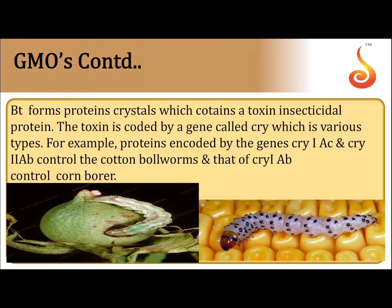Cry genes are classified into three types: cry1Ab, cry2Ab, and cry1Ac. Cry1Ac and cry2Ab control cotton bollworms. Cry1Ab controls the corn borer.